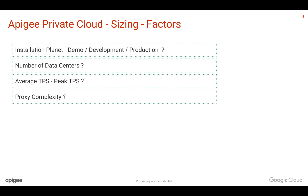The next factor is Proxy Complexity. You can build various kinds of APIs in Apigee's API management platform. Would you like to simply expose the API as a pass-through for analytics and developer onboarding? Or would you like to add transformation capabilities, traffic management capabilities, and security capabilities like OAuth? Or would you like to implement business logic in the platform? You need to understand how complex your proxy is — low, medium, or high.